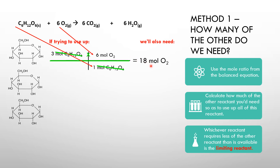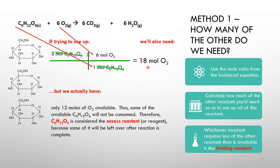I use this ratio to convert from moles of glucose to moles of oxygen used up at the same time. To react all three moles of glucose, I'm going to have to use up 18 moles of oxygen — that makes sense because it's a six-to-one ratio. But we actually only have 12 moles of oxygen available. Thus some of the available glucose will not be consumed; therefore glucose is considered the excess reactant because some of it will be left over after the reaction is complete.